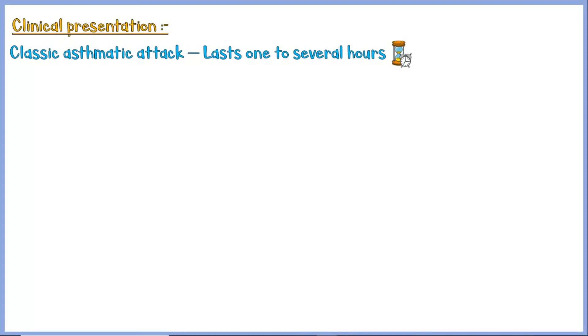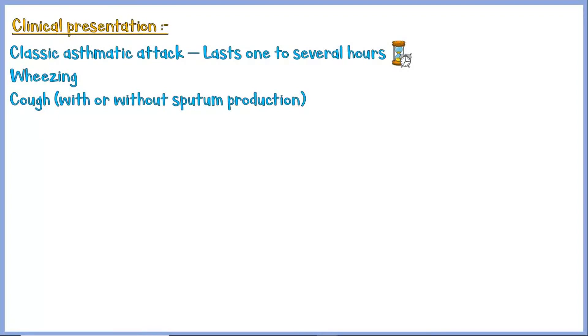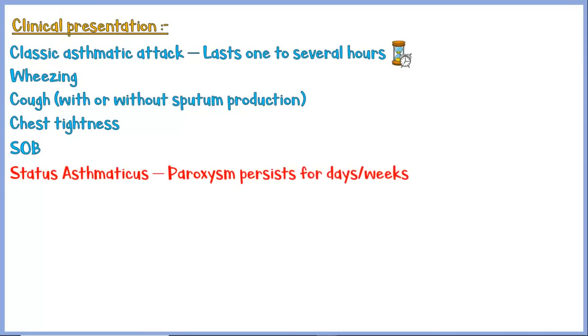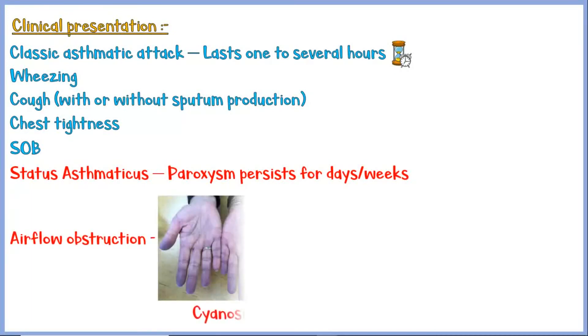The clinical features of asthma have been discussed previously — let's recall them quickly. A classic asthmatic attack usually lasts one to several hours. These patients present with wheezing, cough with or without sputum production, chest tightness, and shortness of breath. There is a more severe condition called status asthmaticus, in which the paroxysm persists for days and even weeks. There is a high degree of airway obstruction, which may manifest as cyanosis or even death.